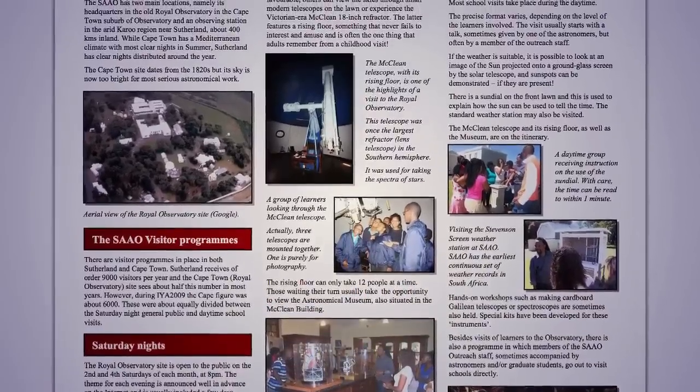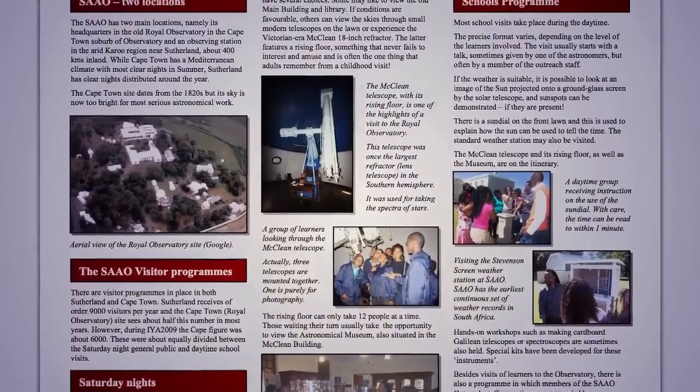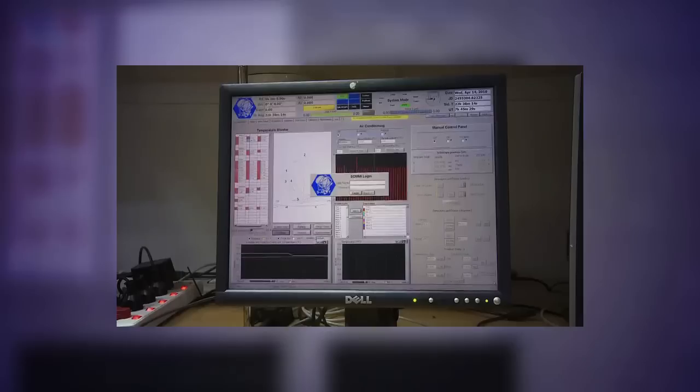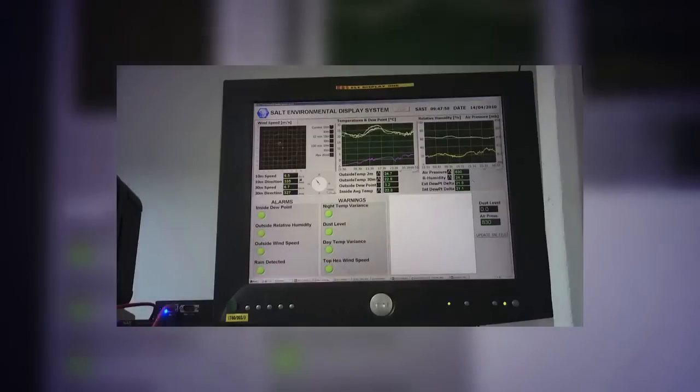The new South African curriculum has got an element of astronomy. From grade 4 to grade 9, learners have to learn about Earth and beyond. So we provide training and support for teachers. And then in terms of learners, we run a number of workshops. For example, there's stuff on software, on astronomy software.